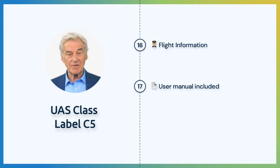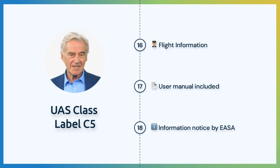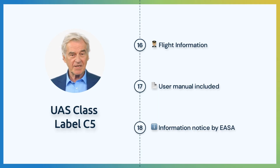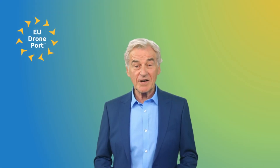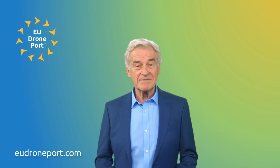Additionally, the operative behavior and limitations must be described. The UA shall include an information notice published by the European Union Aviation Safety Agency about limitations and obligations within the implementing regulation 2019-947. For more information regarding the C-5 class identification label, visit eudroneport.com or click the link in the description. Safe Flights.